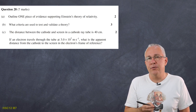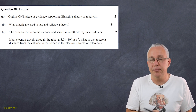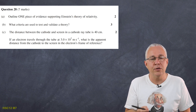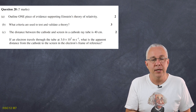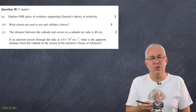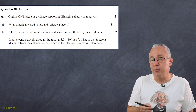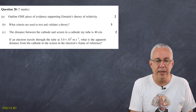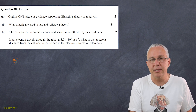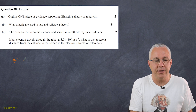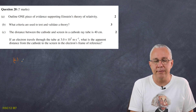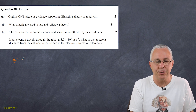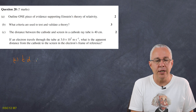Question 28 — a short response question on Einstein's special theory of relativity. It asks: outline one piece of evidence supporting it, what criteria are used to test and validate theories, and what the apparent distance from the cathode to the screen is in the electron's frame of reference. For evidence, within the HSC syllabus, time dilation provides several examples. Check my specific videos on evidence for time dilation.